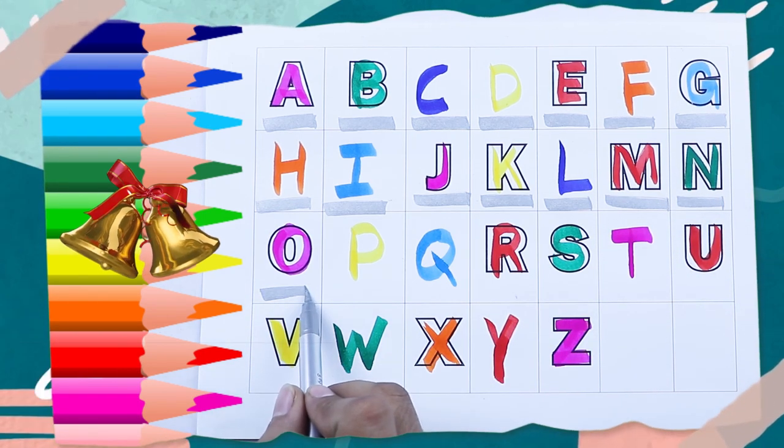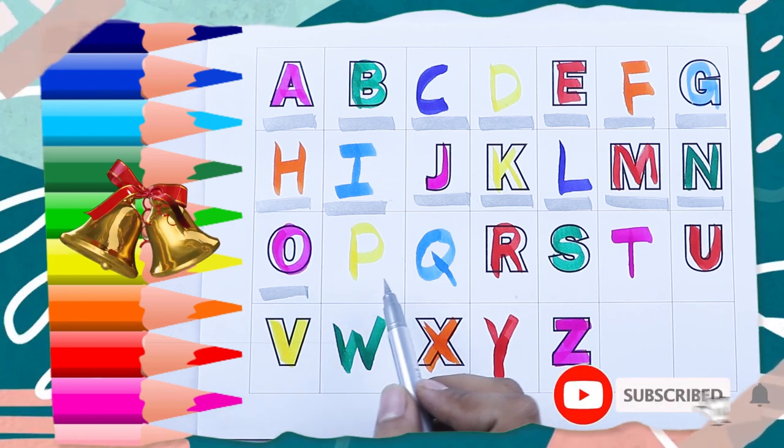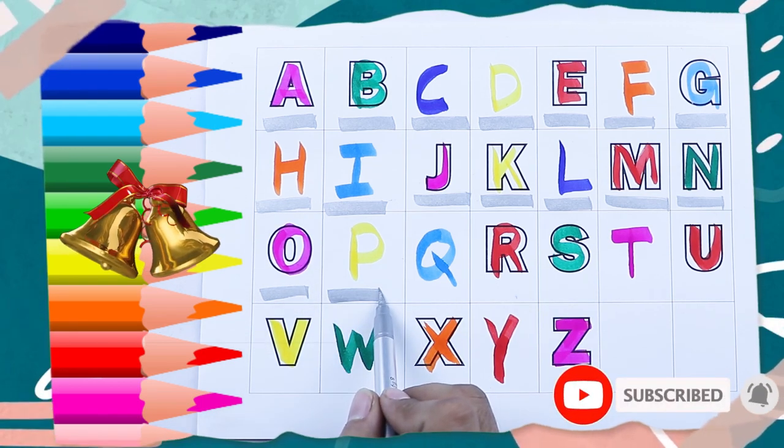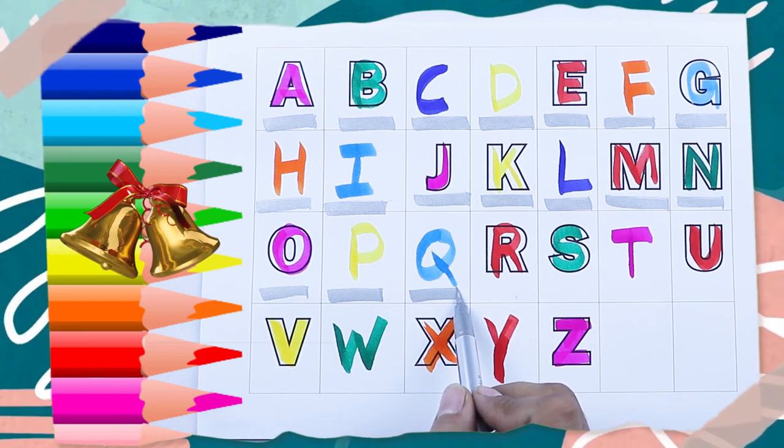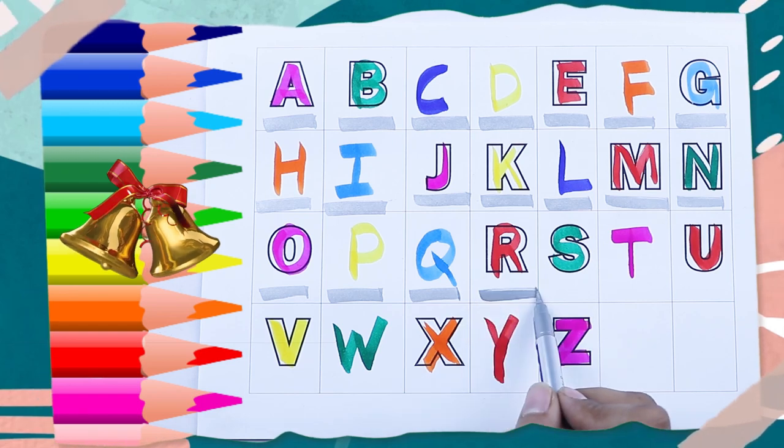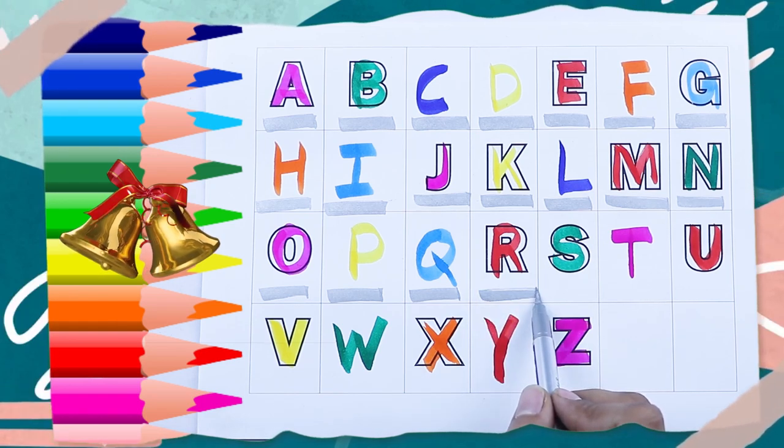Pink color O. O for octopus. Yellow color P. P for parrot. Blue color Q. Q for queen. Red color R. R for rabbit.